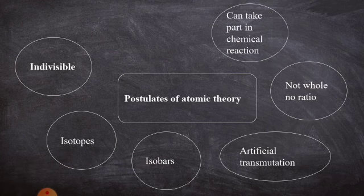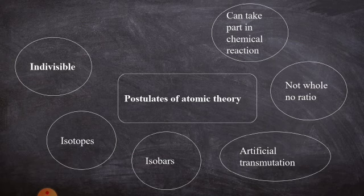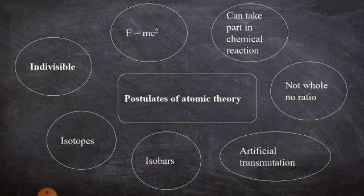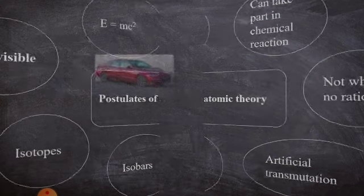Atoms also involve in chemical reactions. We know that two atoms of chlorine will give a chlorine molecule. Also, the mass of an atom can be converted into energy, which is expressed as E = mc². These are the postulates of atomic theory.